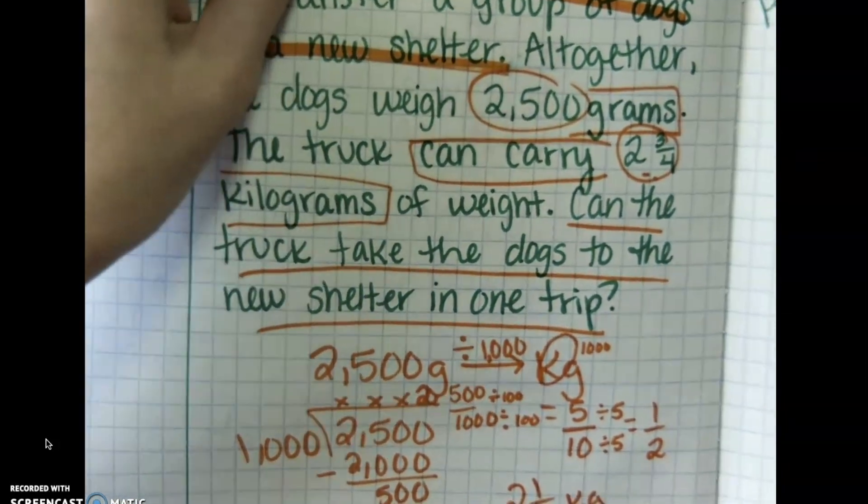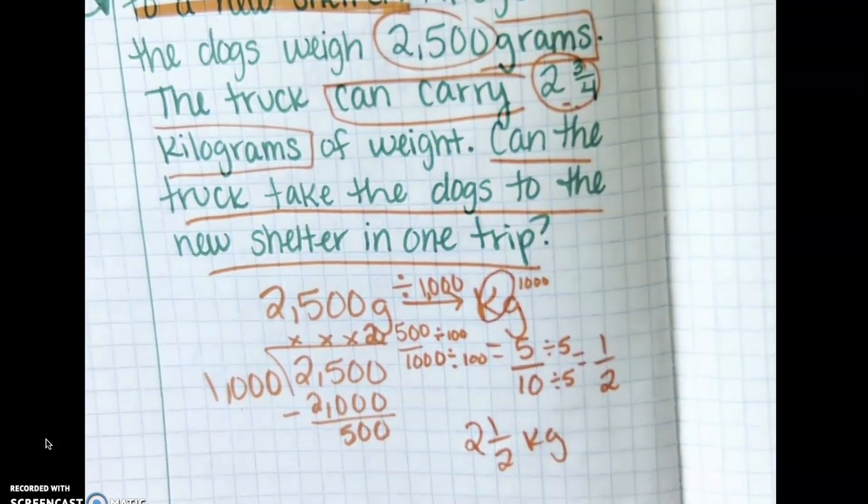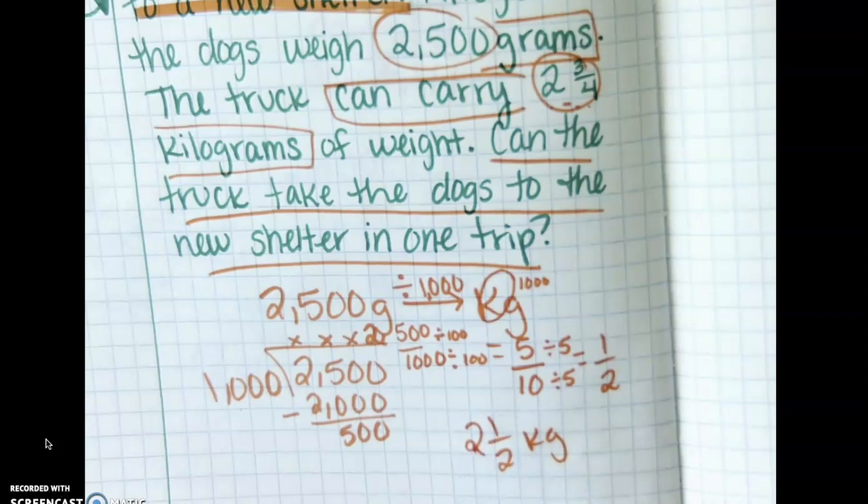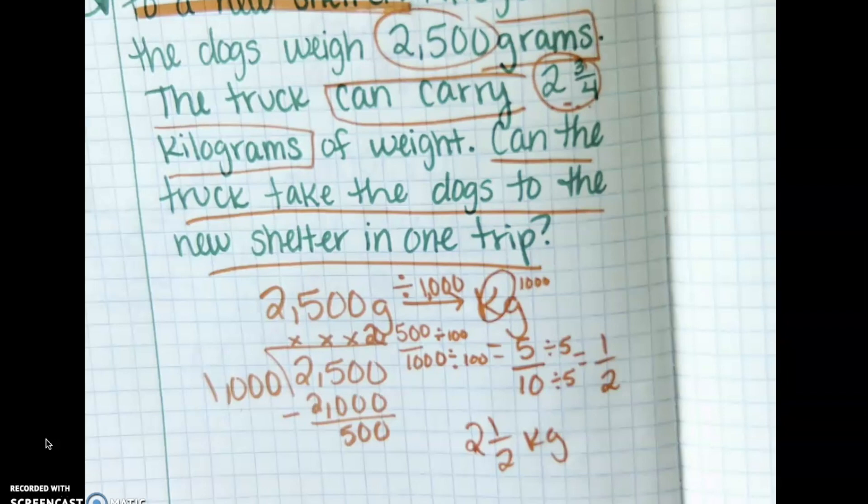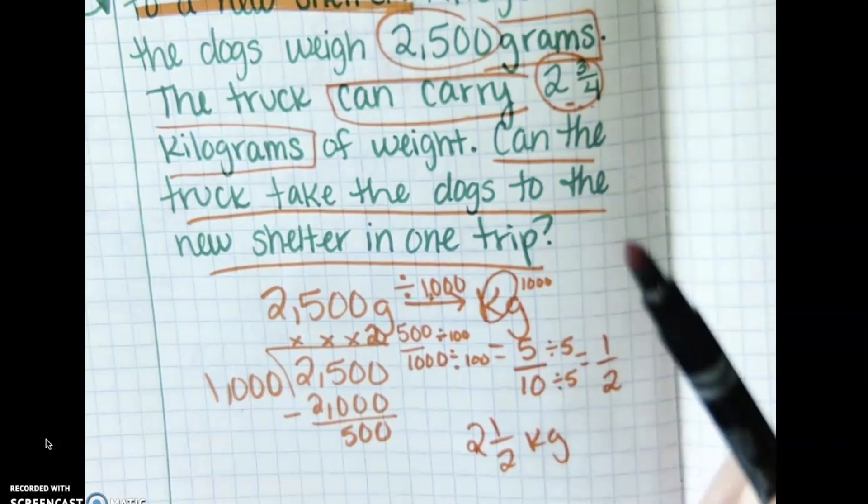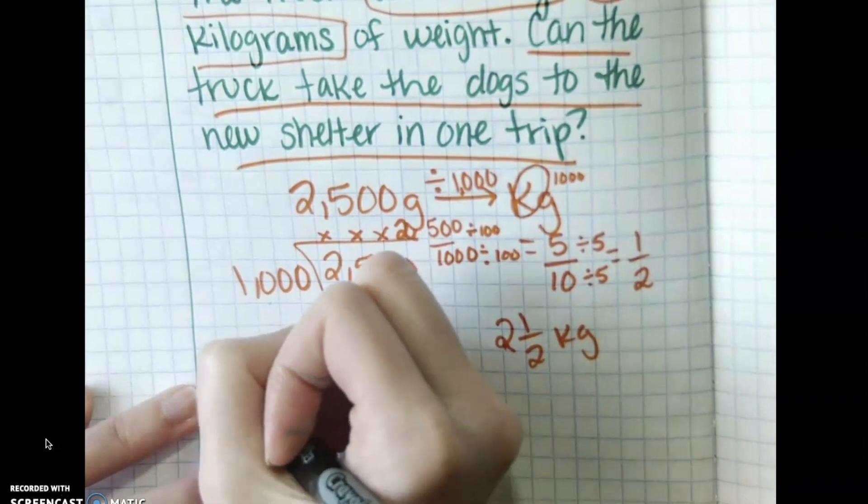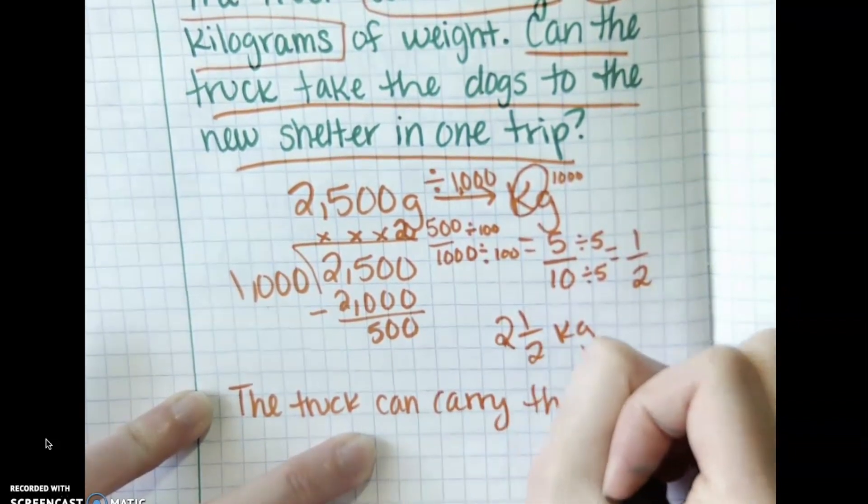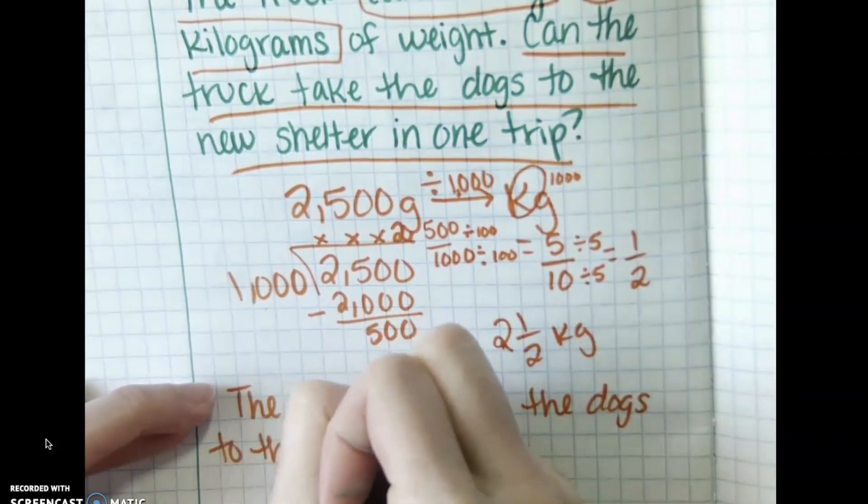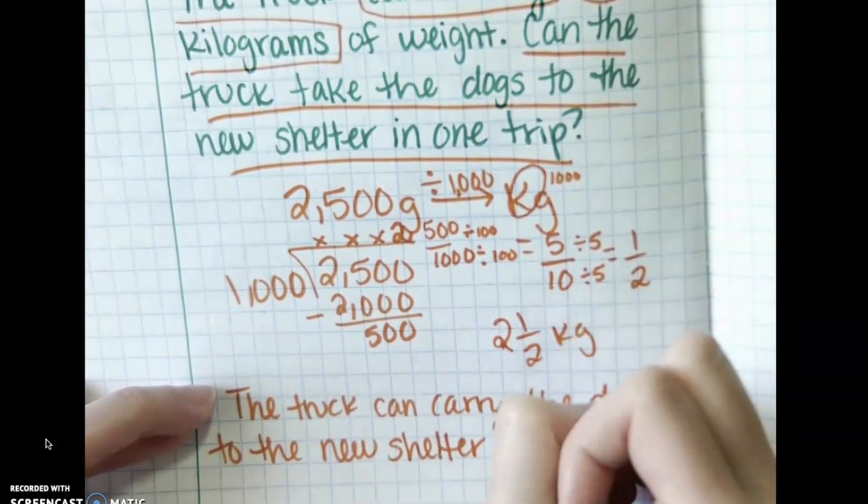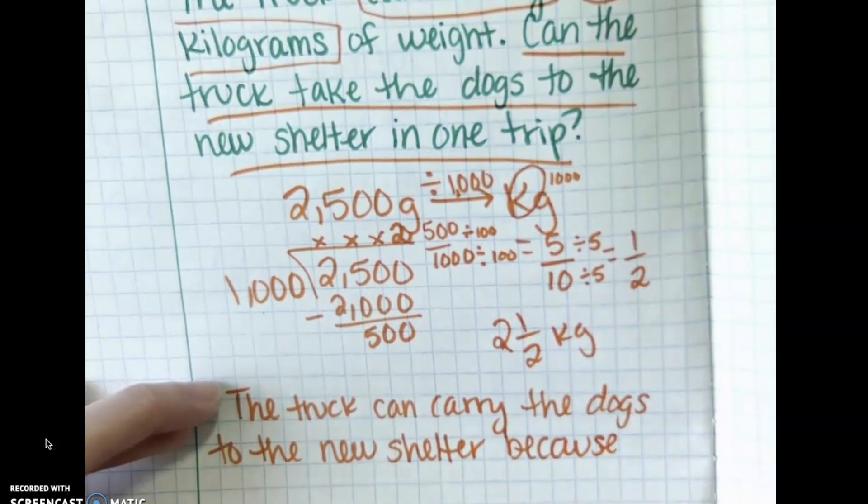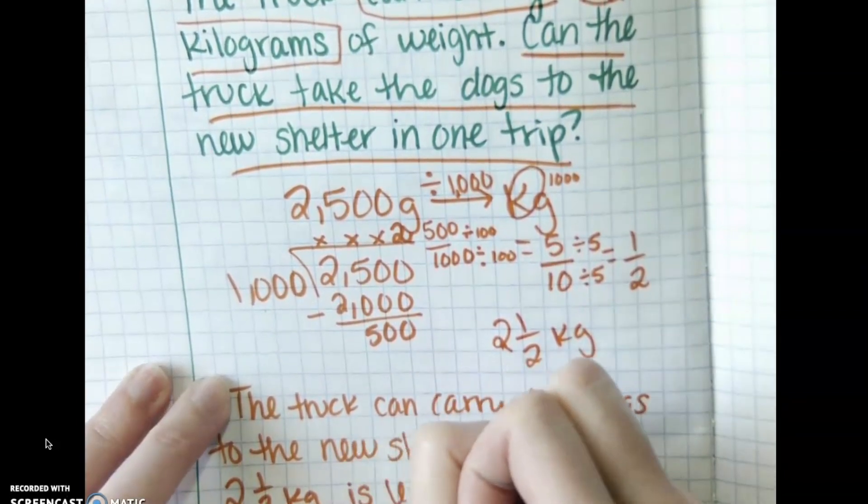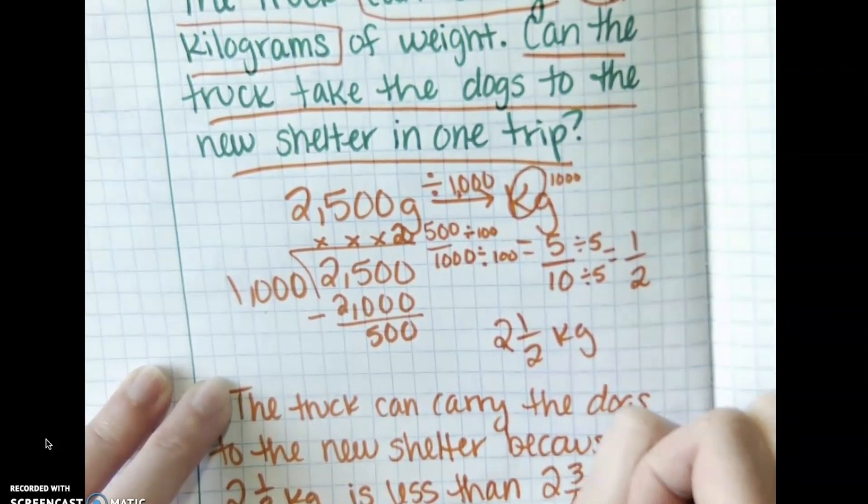Okay. Well, we're not quite done yet. We found the information we needed to find, but now we need to see if the truck can carry that weight. So it says the truck can carry two and three quarters kilograms. Well, this is two and one half kilograms. I have to think which one's bigger? Two and three quarters is bigger. So yes, the truck can carry the dogs. So I would write the truck can carry the dogs to the new shelter because two and one half kilograms is less than two and three quarters kilograms. Done.